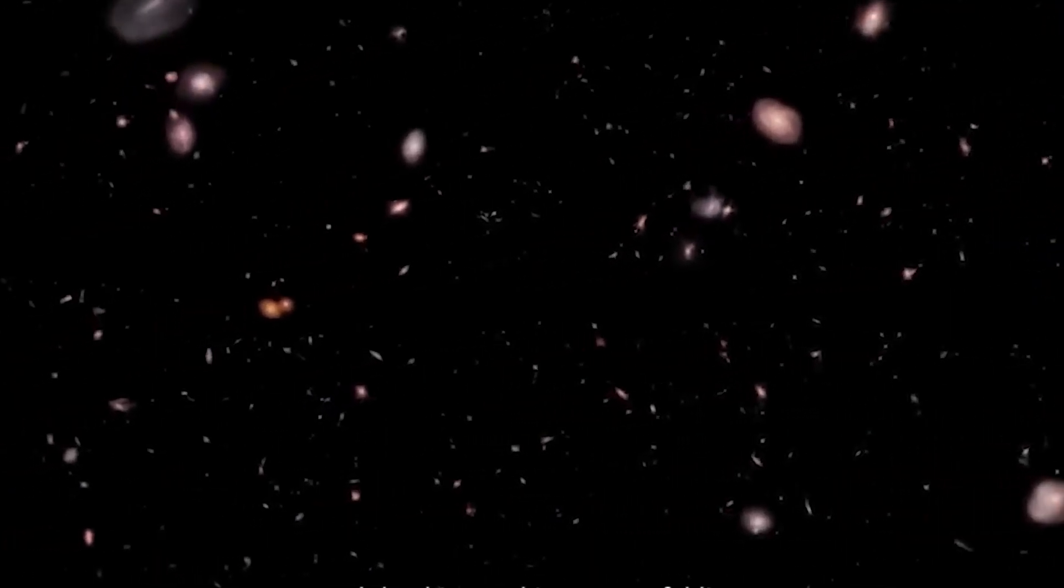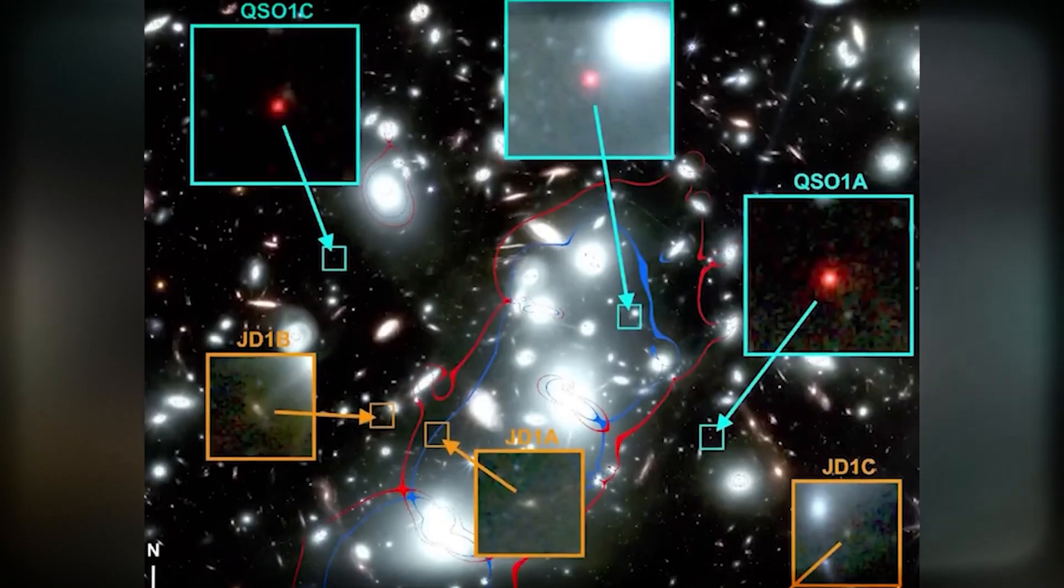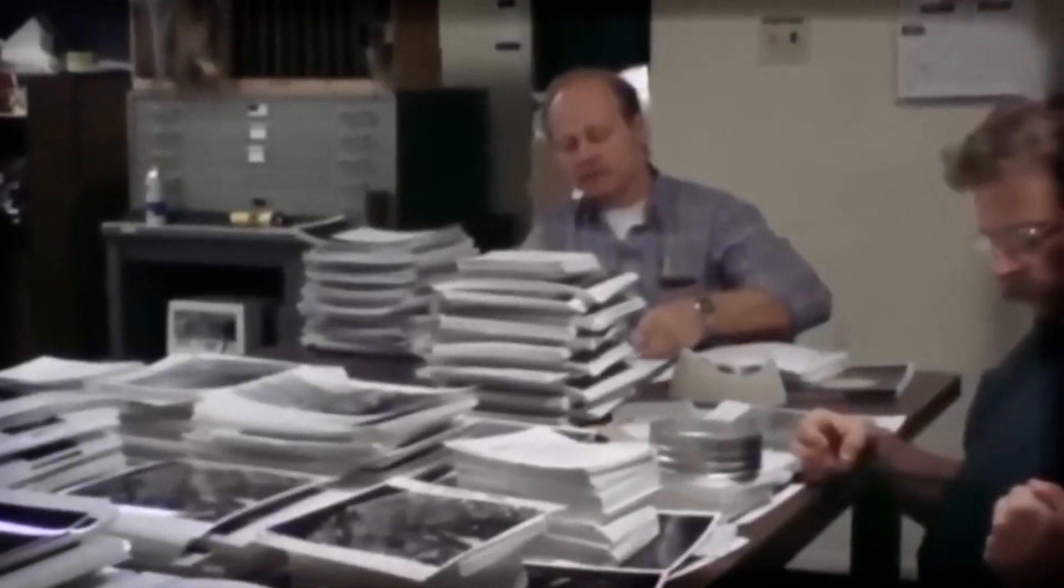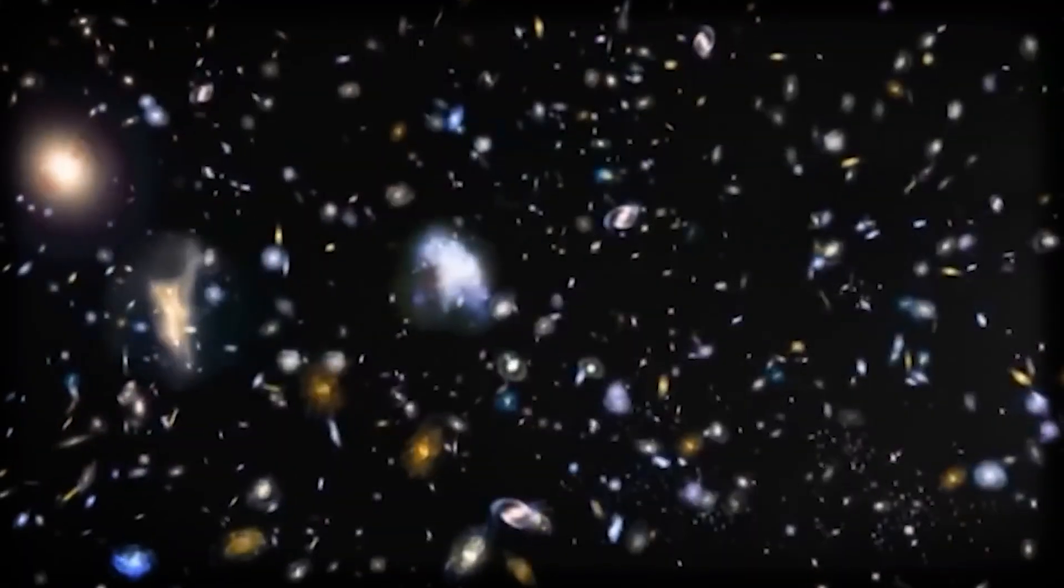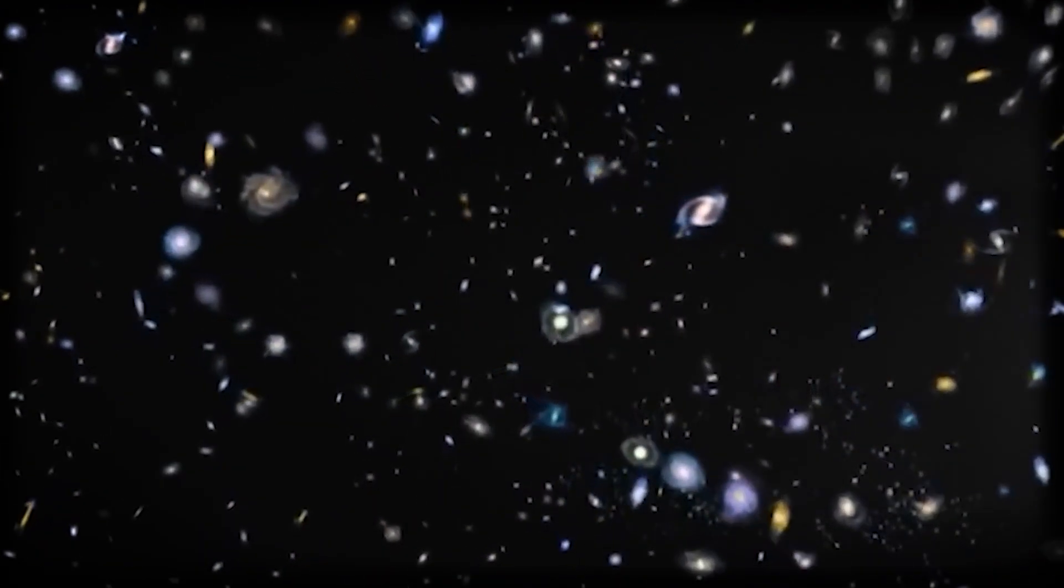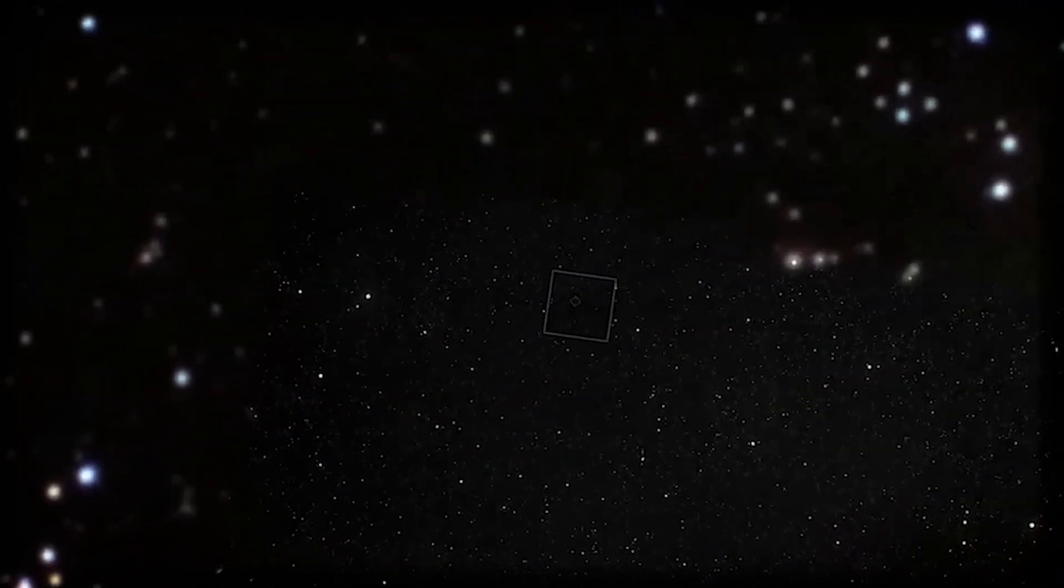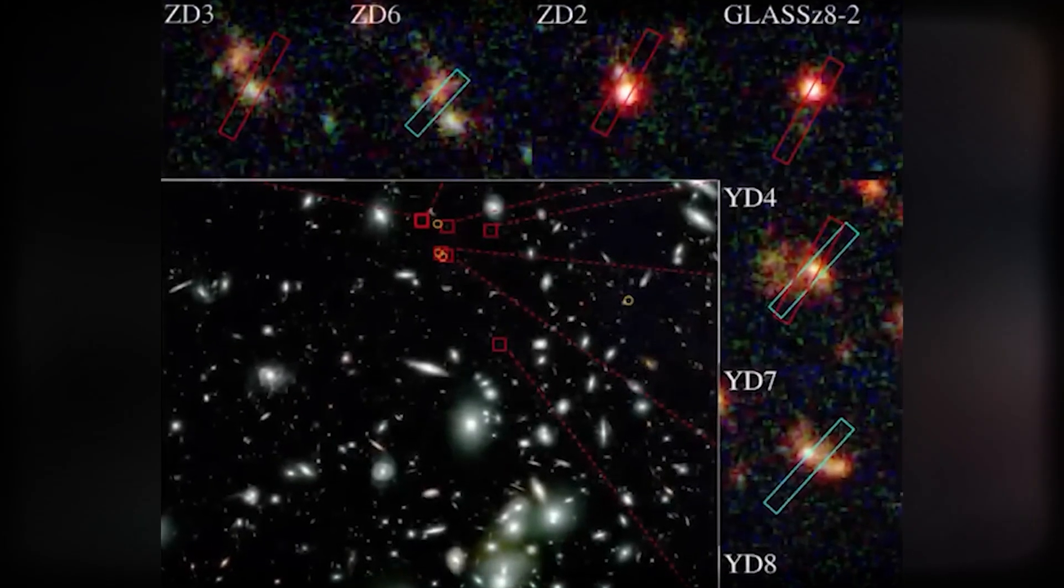These mysterious, unclassified cosmic objects, whatever they are, don't look like any galaxies we've cataloged. They don't fit our categories, and they don't play by the rules. It's like someone shuffled the deck of the universe and forgot to tell the astronomers. And here's the kicker. These things aren't just out there. They're showing up way earlier than they should.